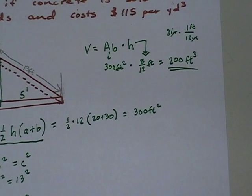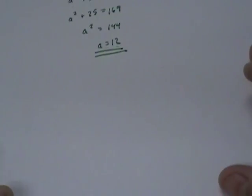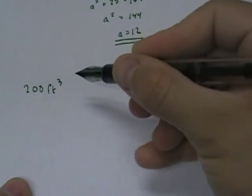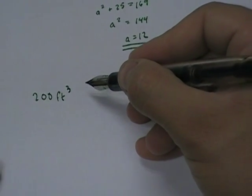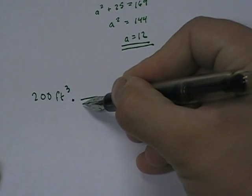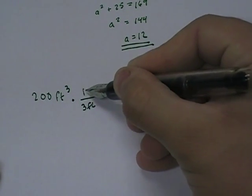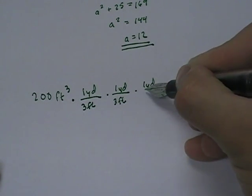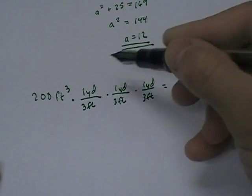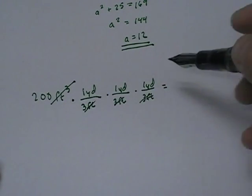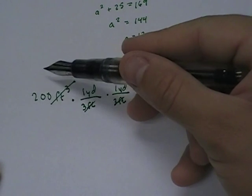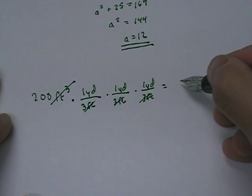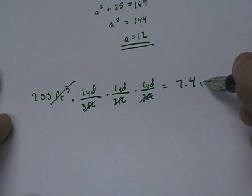So I know I need to convert this to cubic yards. So what do I do? Well, I'm going to come down here to the bottom. And I say, all right, 200 cubic feet. And then, if you've seen my videos, you've seen this before. 3 feet is 1 yard. And we're going to do this conversion 3 times. Feet cubed cancels with feet cubed. And what do we do mathematically? We say 200 divided by 3, divided by 3, divided by 3, since 3 is on the bottom. And when I do this, I end up with 7.4 cubic yards.